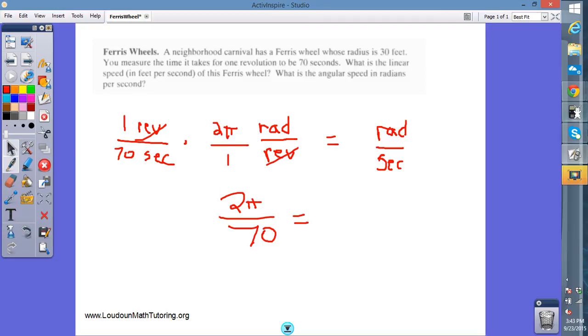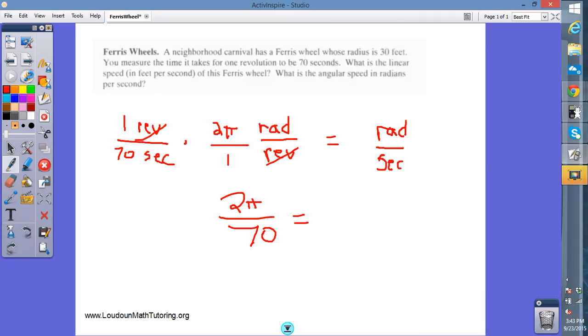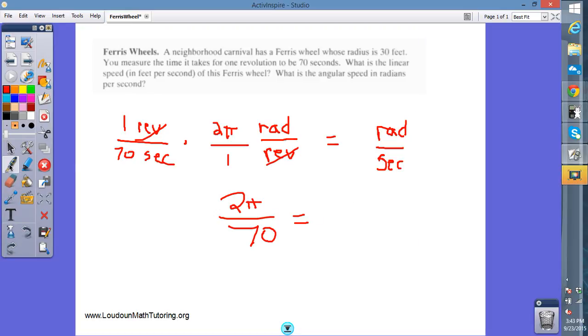Again, we're going to need a decimal approximation for that. So 2π divided by 70, we're going to round this off to 0.09. Don't forget your units. It's radians per second and don't forget what we're talking about. We're talking about angular velocity.